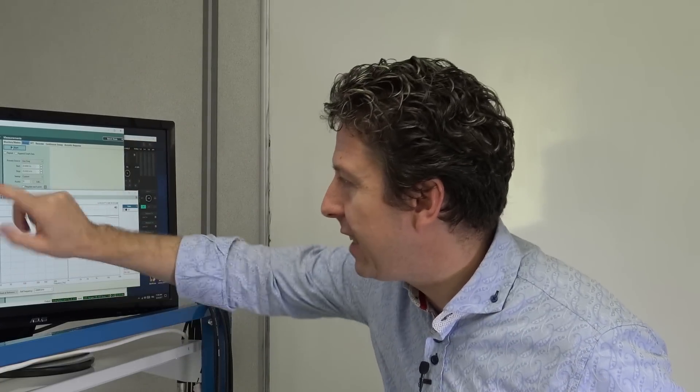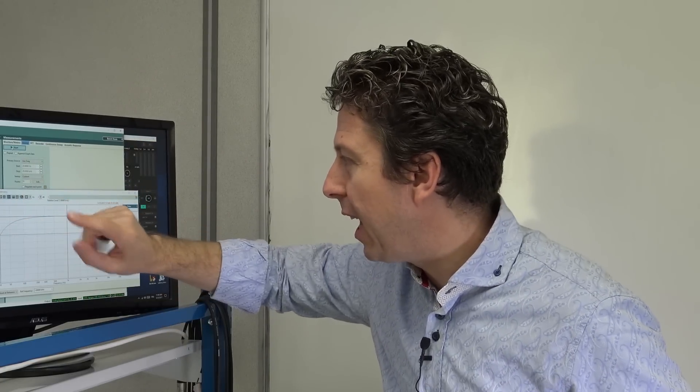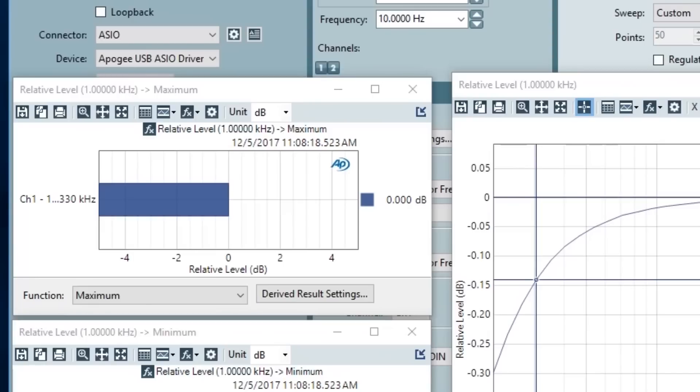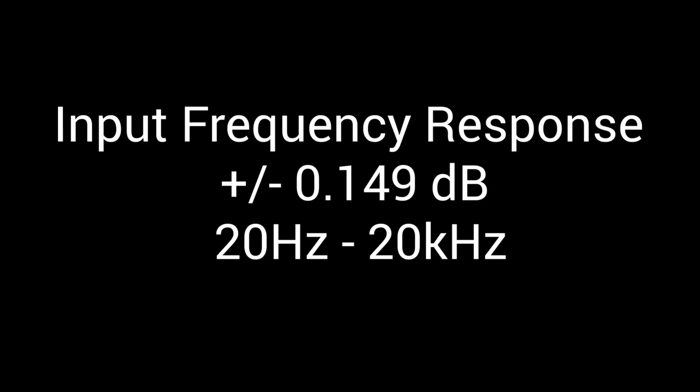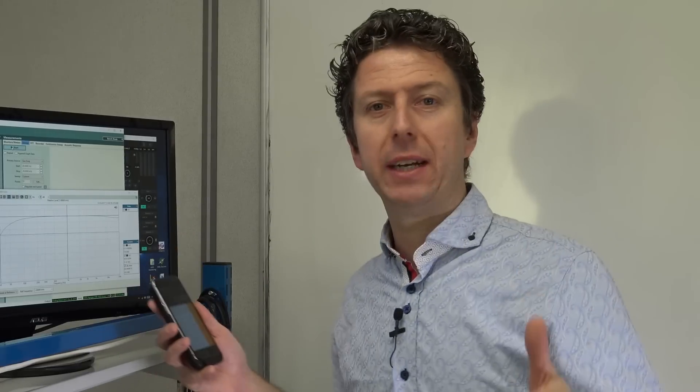It's pretty flat. Now the interesting thing is these two numbers here. The upper level is always going to be zero because it's where the curve is going to. The lower number is the important one. So we actually take this number, this 0.298, and divide it by two. So our input frequency response is plus minus 0.149 dB 20 to 20.